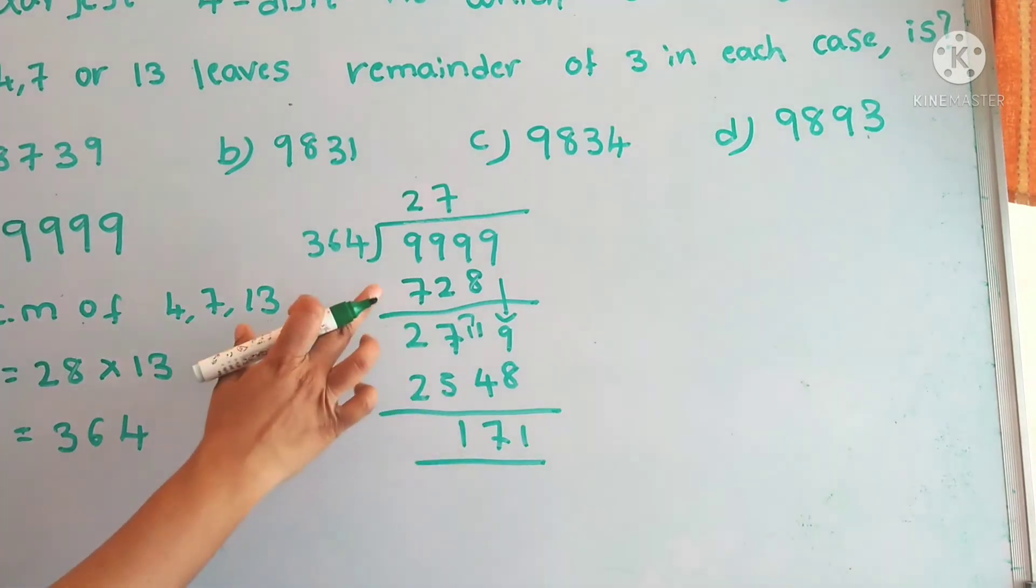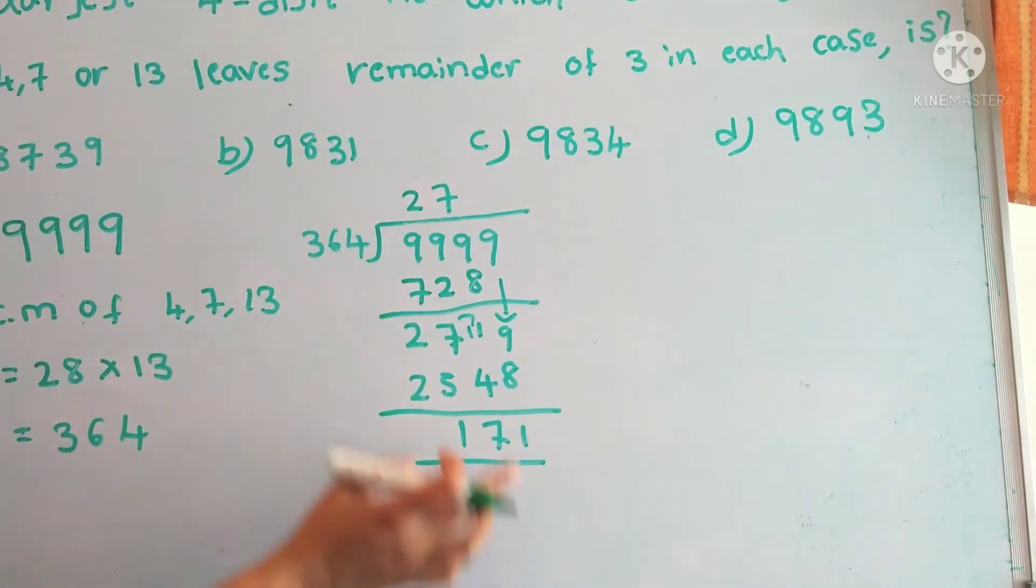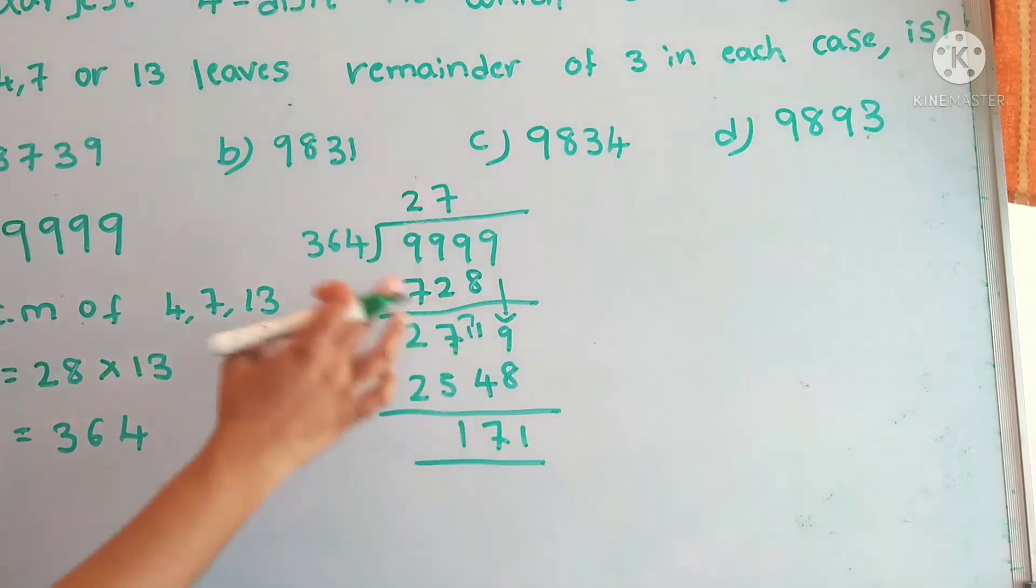If we got the remainder as 0, this number is exactly divisible by 364. But here we got the remainder.